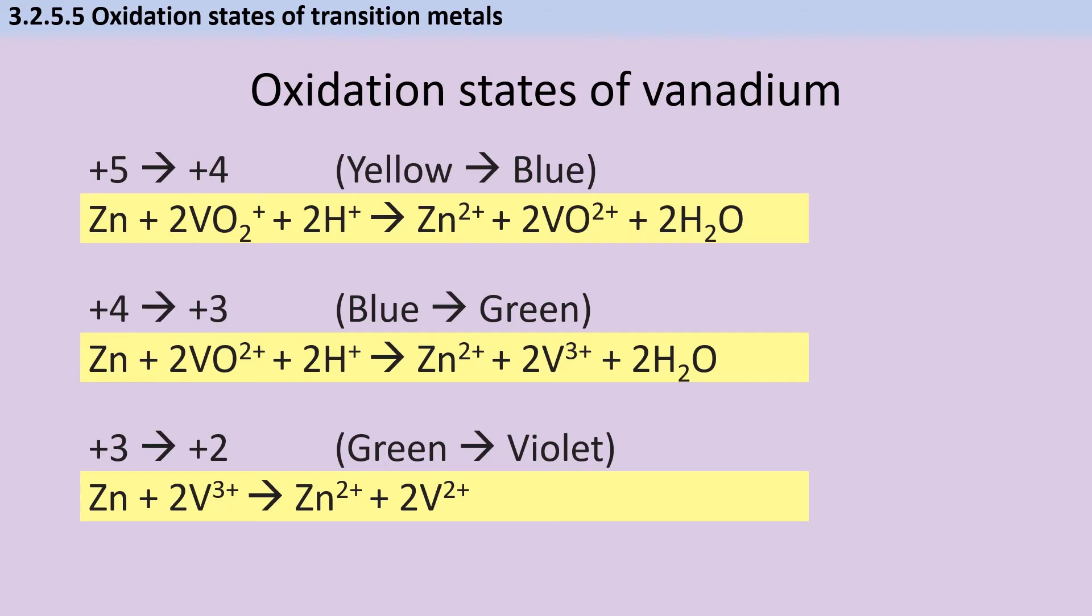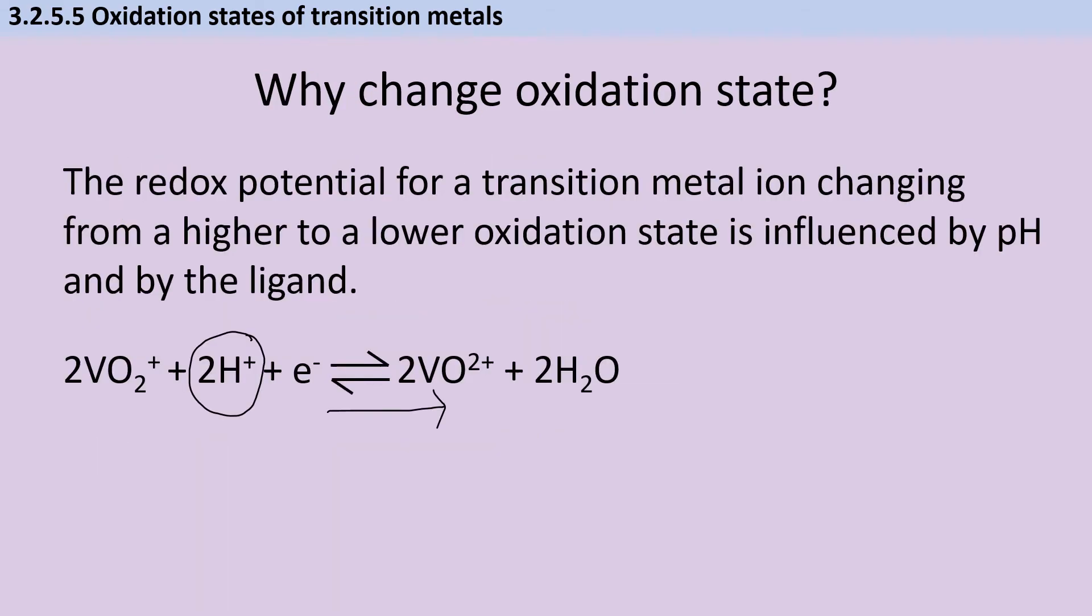Likewise, you should also write ionic equations for each subsequent reduction step. If you're wondering why transition metals exist in different oxidation states at different times and there isn't a single most stable version, it depends on the conditions they're in and the ligands they're bonded to. In general, acidic conditions favor reduction and alkaline conditions favor oxidation because they affect the position of the equilibrium.